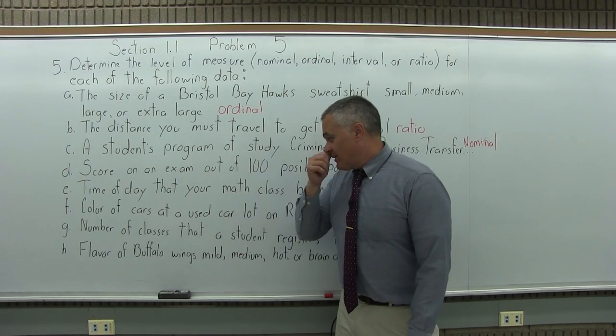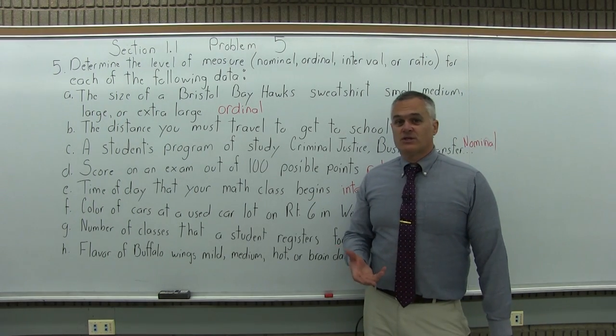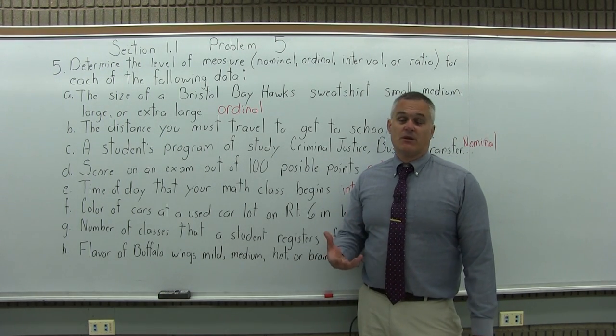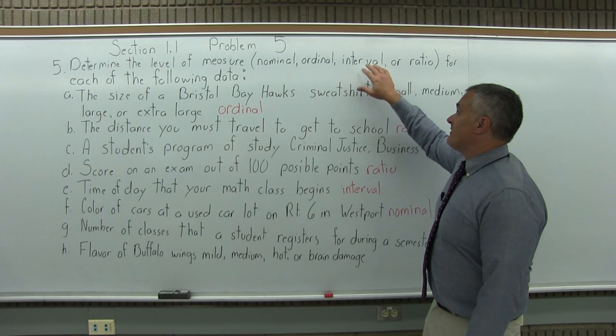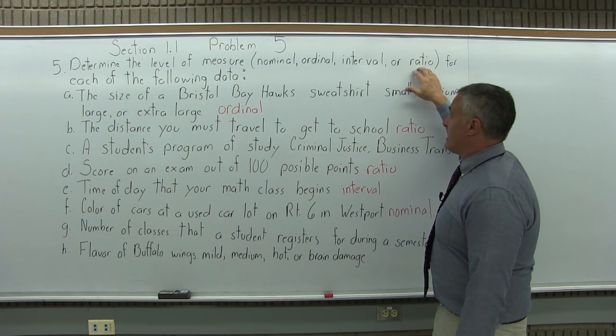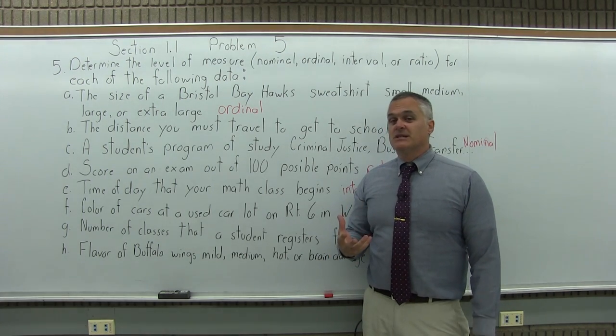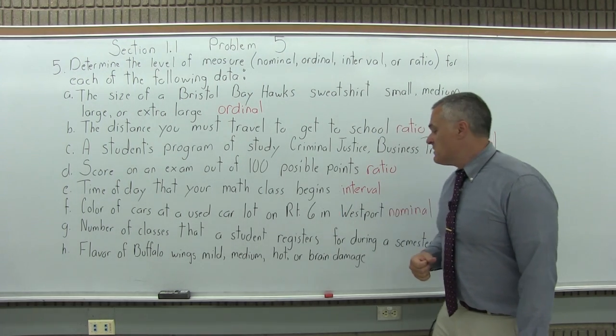Part G, the number of classes that a student registers for during a semester. So again, the number of classes would be a number answer, meaning it would either have the interval level of measure or ratio level of measure. Now, again, what you have to ask is, do we have a sensible ratio? As you make the number twice as big, does it measure twice as much of something?